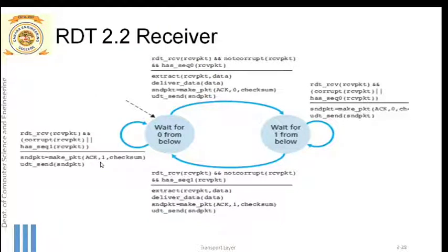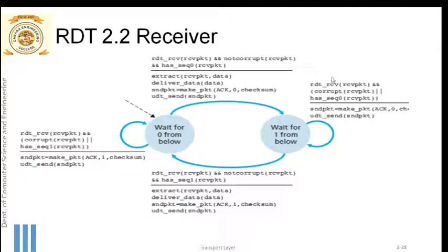Sending ACK 1 in this negative case indicates the receiver has not accepted that data — the packet was discarded. The sender can understand this via the sequence number. For the next expected packet with sequence number one, if it is corrupted or has the wrong sequence number, the receiver must notify the sender.